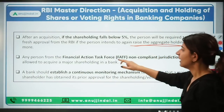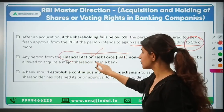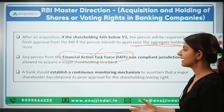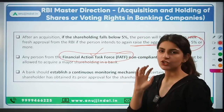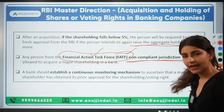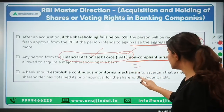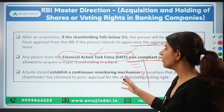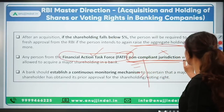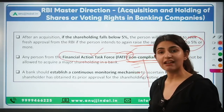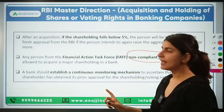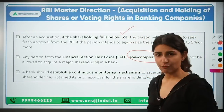Who is ineligible? FATF — the Financial Action Task Force — is an intergovernmental organization and financial watchdog for money laundering. FATF maintains a non-compliant jurisdiction list. If any individual falls on this non-compliant jurisdiction list, they cannot apply for 5% or more shareholding in a bank.